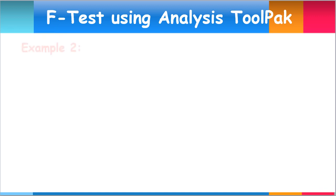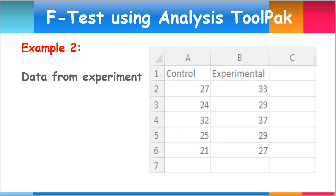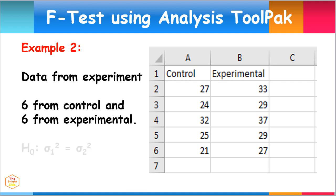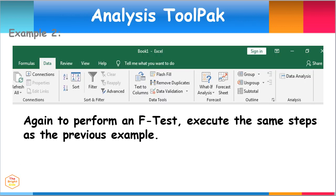Let's have another example. In this case, we will use the data from the results of measurements of the control setup and experimental setup. Again, the null hypothesis states that the variances are equal, while the alternate says that they are not equal. To perform an F-test, execute the same steps as the previous example.